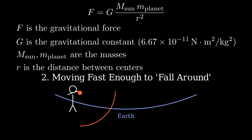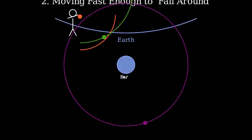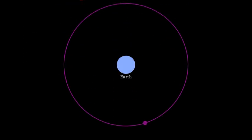Think about throwing a ball on Earth. If you throw a ball horizontally, it curves downward and eventually hits the ground. If you throw it faster, it travels farther before hitting the ground. Now imagine throwing it so fast that as it falls, the Earth's surface curves away at the same rate. The ball would never hit the ground. It would be in orbit.